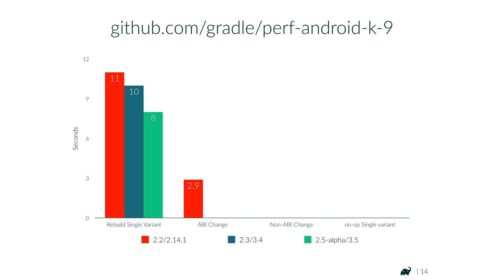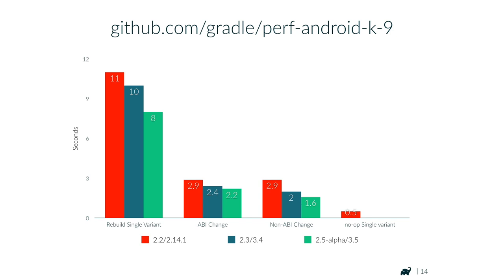For the K9 project: ABI change takes 2.9, 2.4, and 2.2 seconds across the three versions. Non-ABI change takes 2.9, 2.0, and 1.6 seconds. And no-op single variant was never slow — 500 milliseconds, 400 milliseconds, 400 milliseconds.